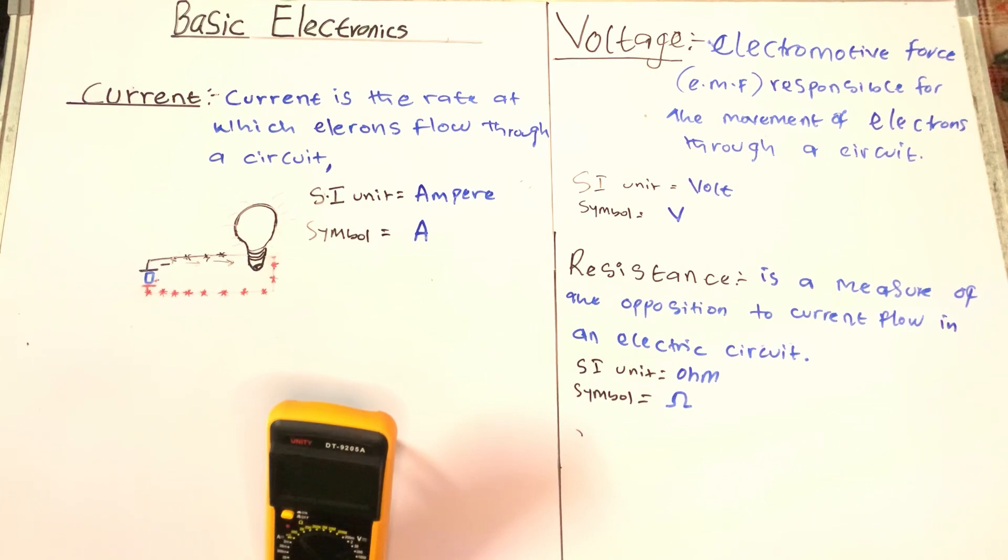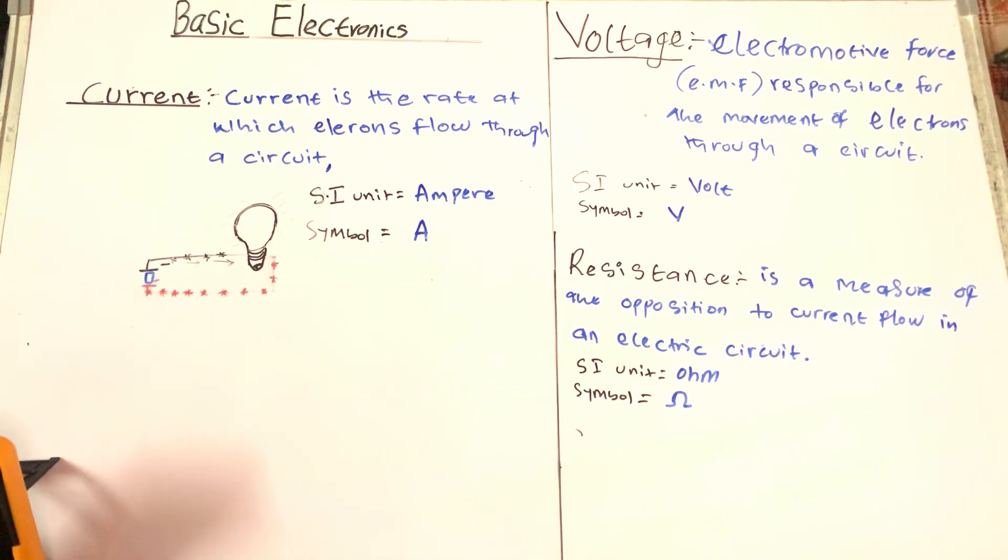So the SI unit of voltage is volts, and the symbol is V as illustrated here. And then the next fundamental element we want to talk about is resistance.